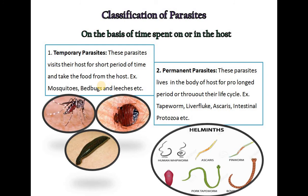Parasites are also classified on the basis of time spent on or in the host. The first type is temporary parasites, which visit the host for a short period to obtain food. Examples include mosquitoes, bed bugs, and leeches. The second type is permanent parasites, which live in the host for prolonged periods throughout their life cycle. Examples include tapeworm, liver fluke, Ascaris, and intestinal protozoa.